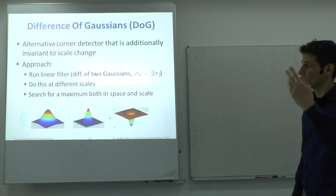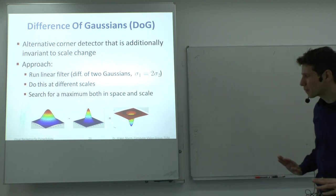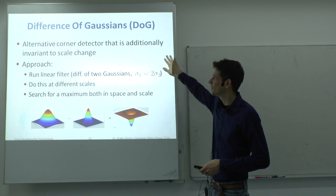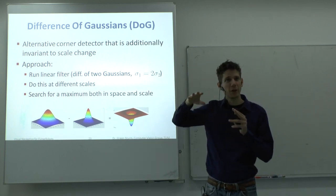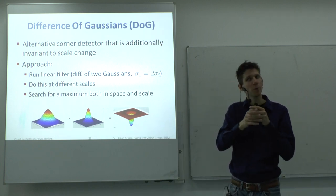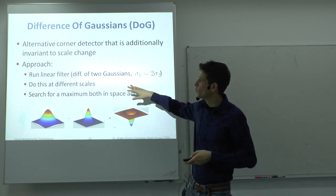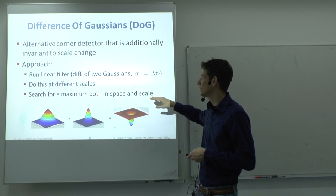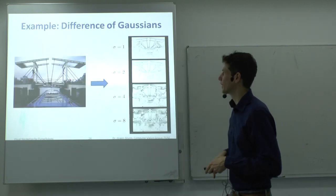Harris corners are used a lot in practice, but there are better ones. One particularly popular for feature point detection is the Difference of Gaussians (DoG) detector, which is additionally invariant to scale. The idea is: you remember the Gaussian filter that blurs the image with parameter sigma. You can blur with different Gaussian kernels — a very small one of one pixel, or five or ten pixels — and the DoG looks for a maximum in the difference between these blurred images, also in scale.